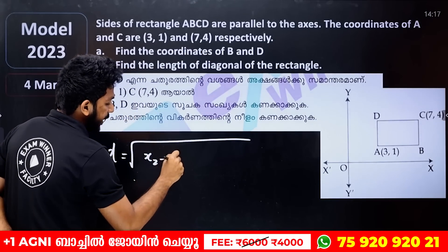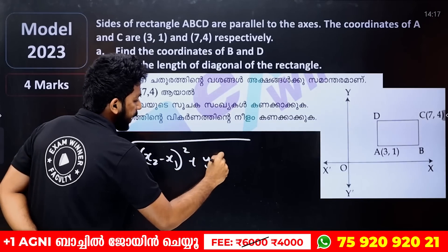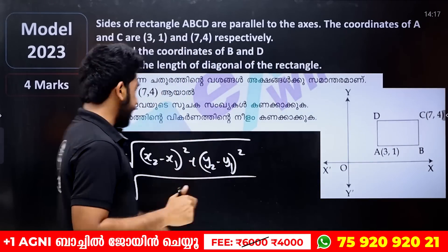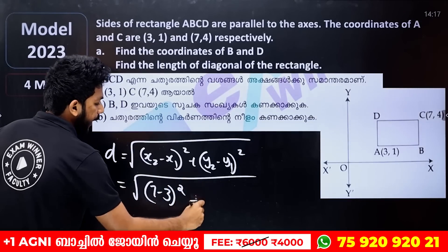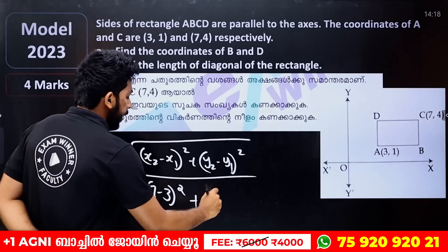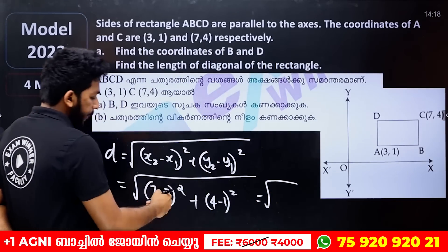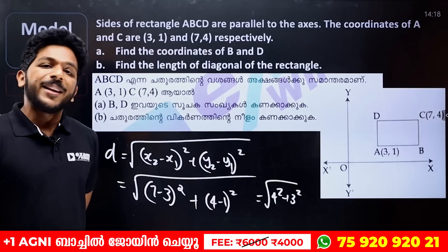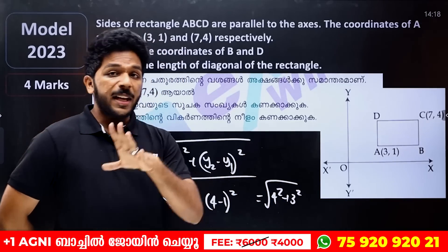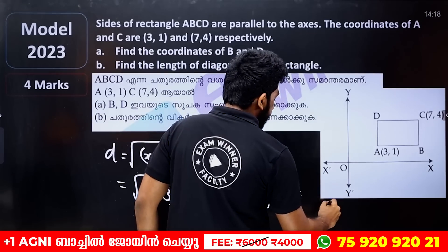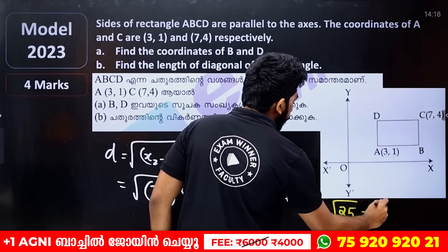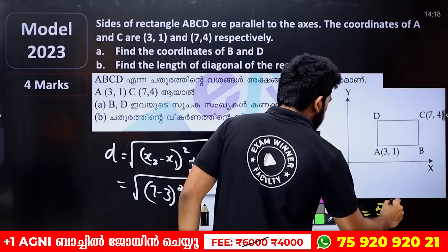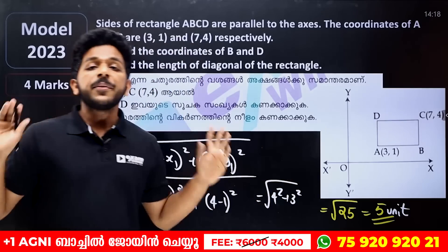Using the distance formula: AC = √((x2 − x1)² + (y2 − y1)²). Here x values are 7 and 3, so 7 − 3 = 4. The y values are 4 and 1, so 4 − 1 = 3. So AC = √(4² + 3²) = √(16 + 9) = √25 = 5. The length of AC is 5 units.